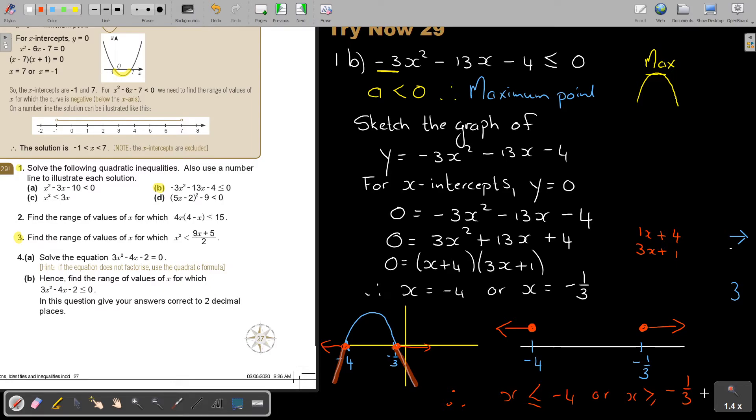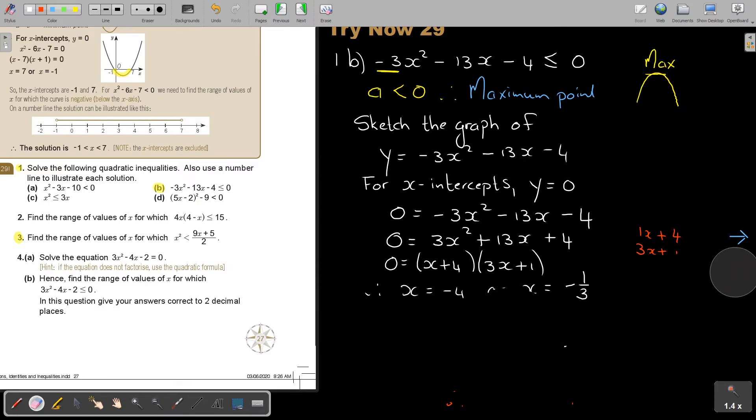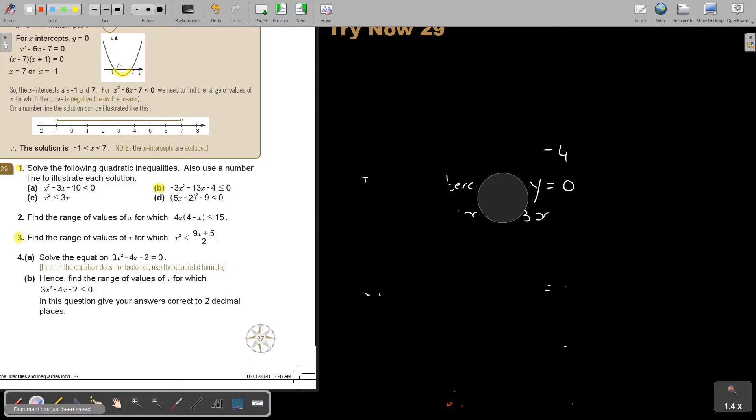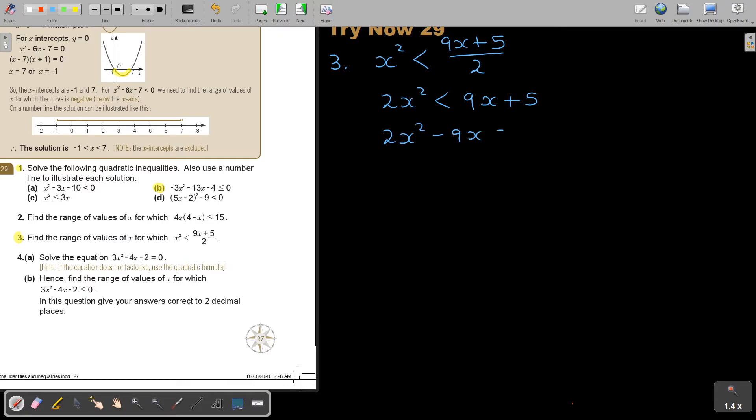I forgot. Let's just do number 3. I'm going to make space. You can do this. Just remember quadratic inequalities. Make a sketch. Number 3. Find the range of values of X for which. X squared minus 9X plus 5 over 2. So, if I'm going to simplify this. I'm just going to multiply across. So, 2X squared. And if I take it over.